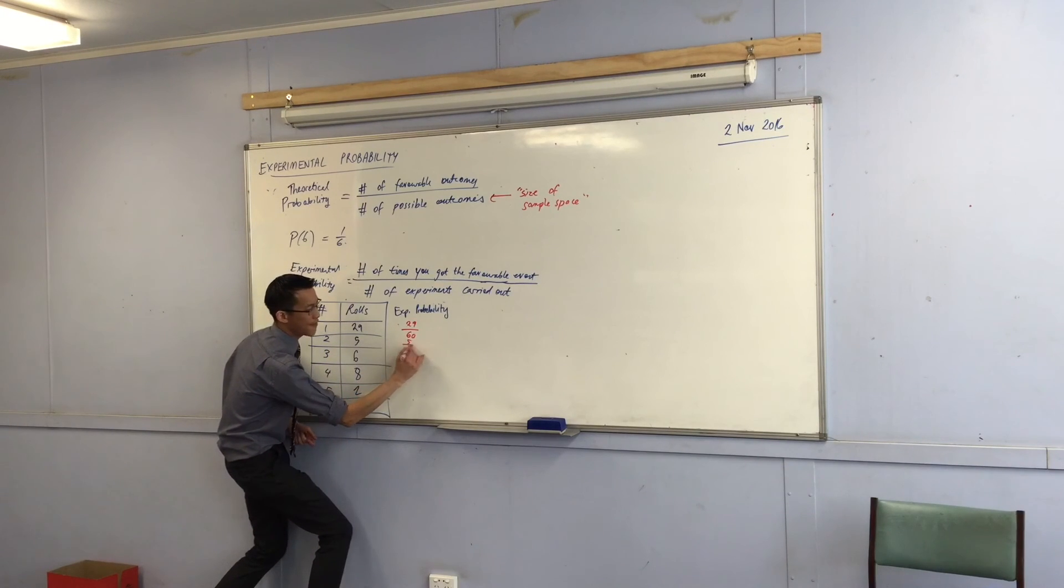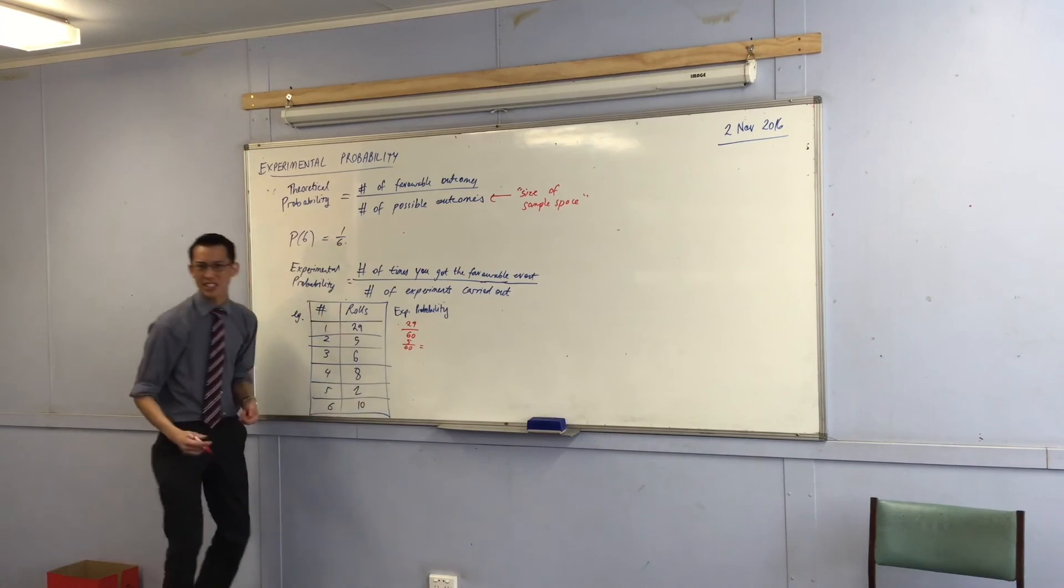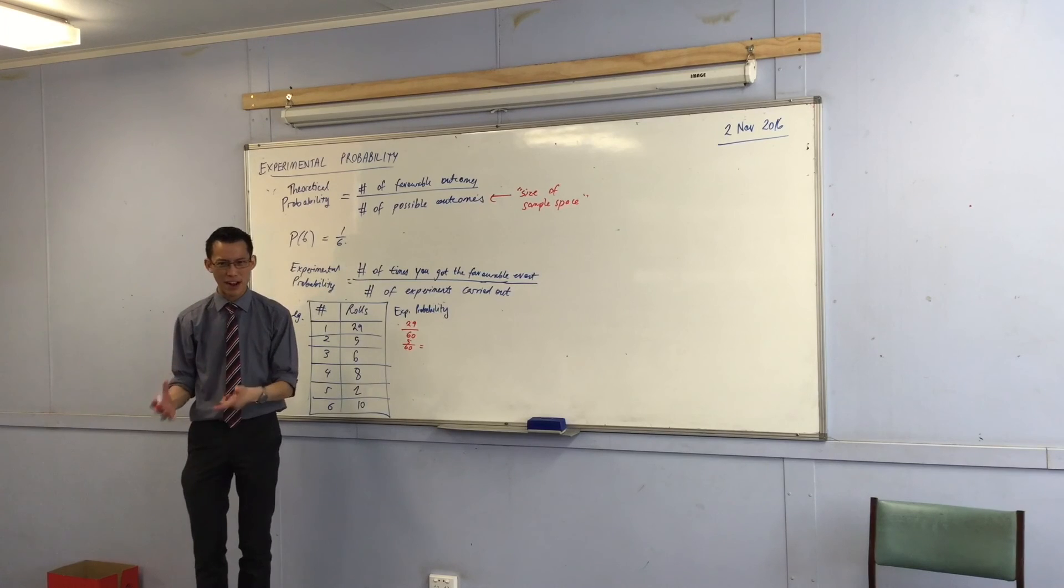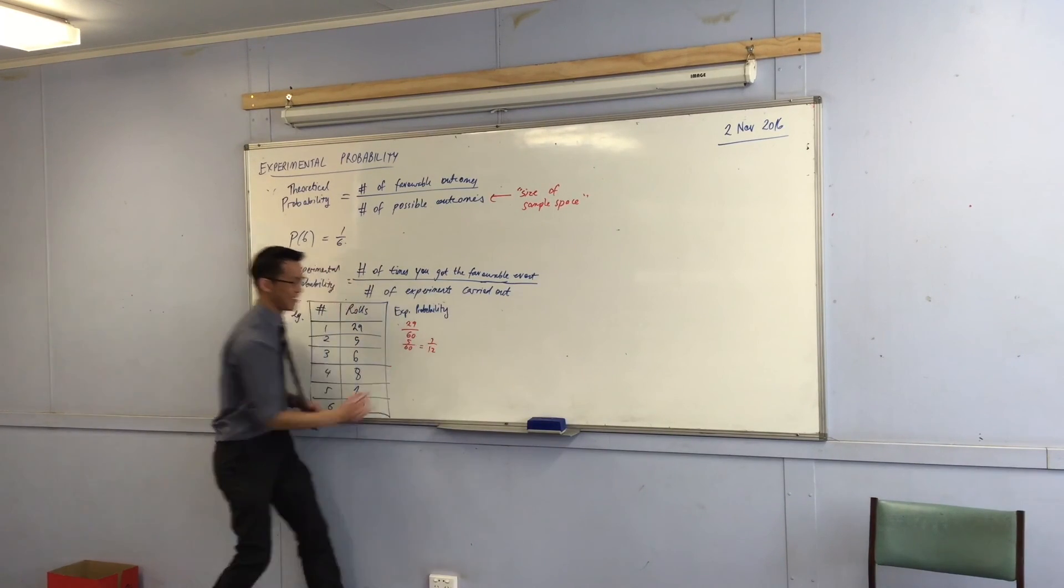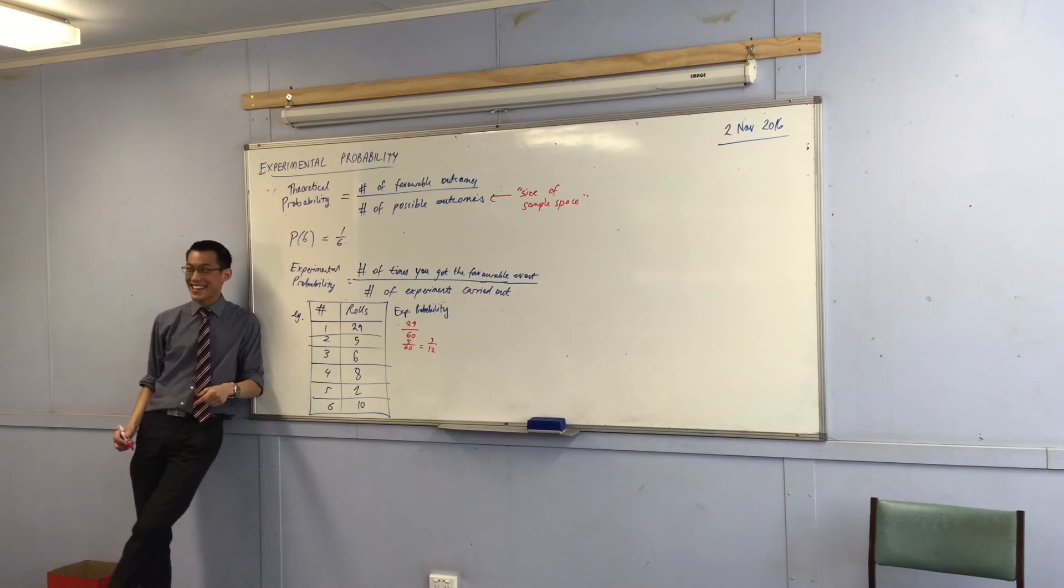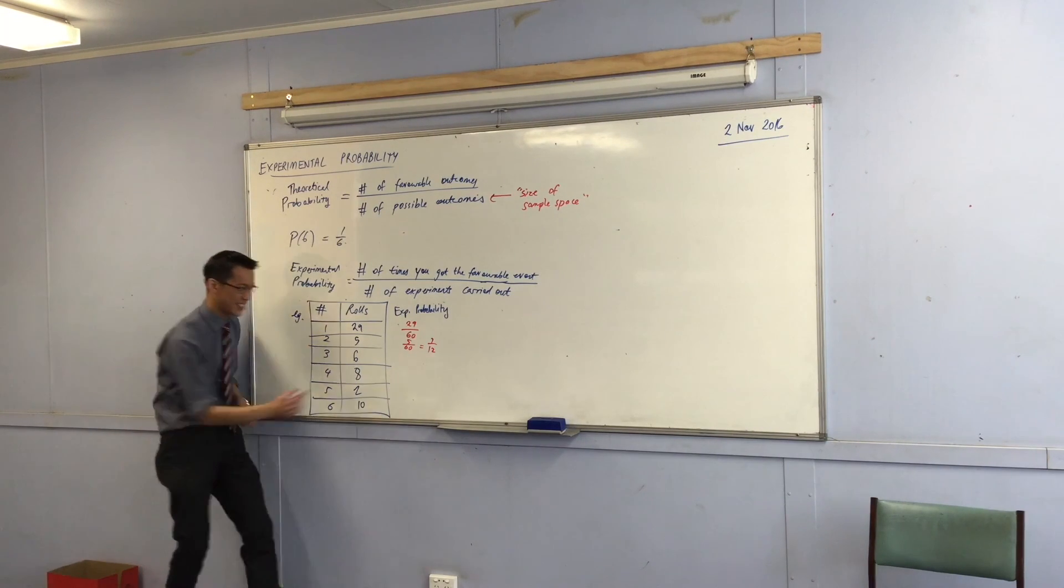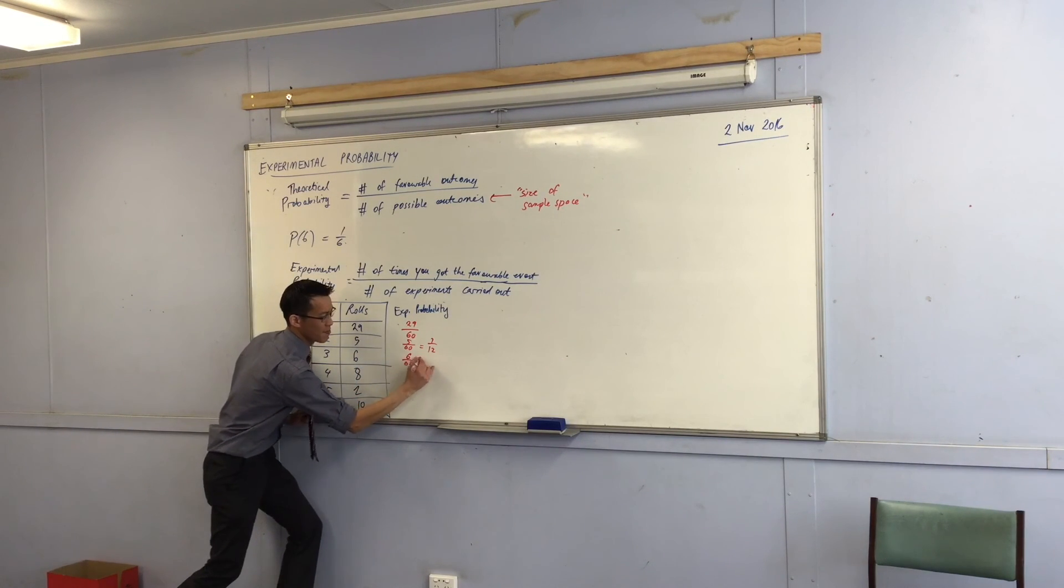This is going to be 5 out of 60. That's true, but I can simplify it a little bit, right? Can I write that as a better fraction? How was it going to write? 1 out of 12. 1 out of 12, very good. 6 out of 60? 6 out of 60, what's that simplification?